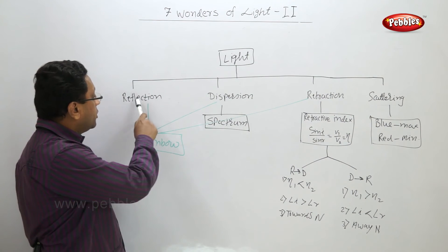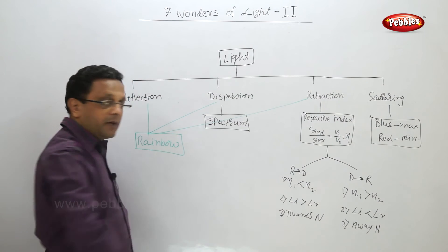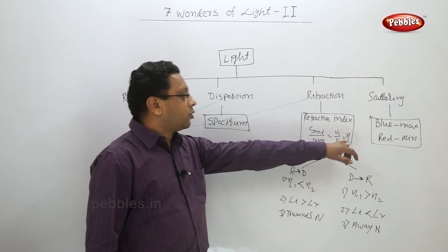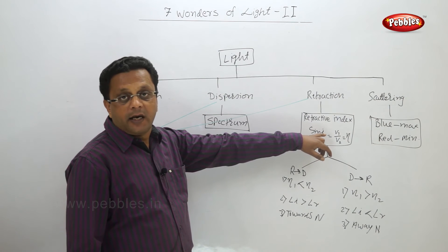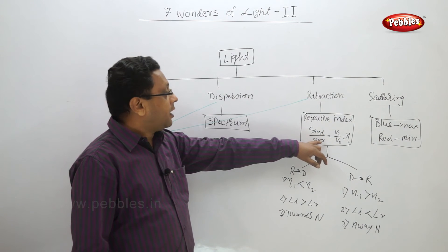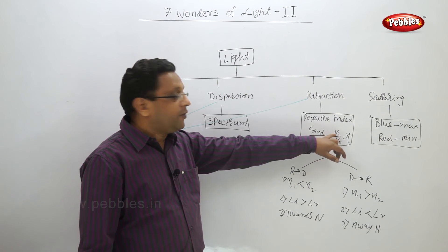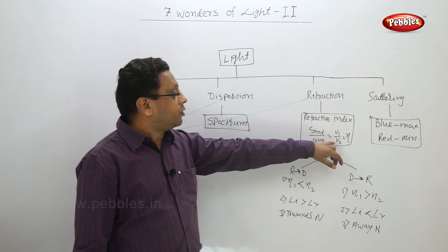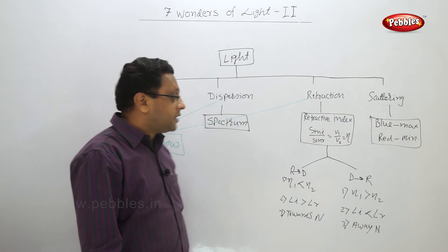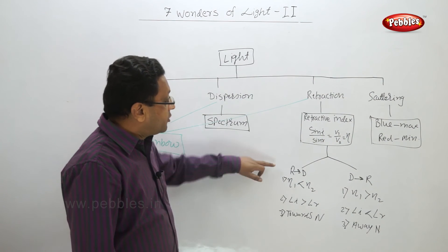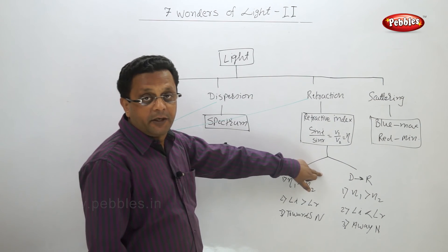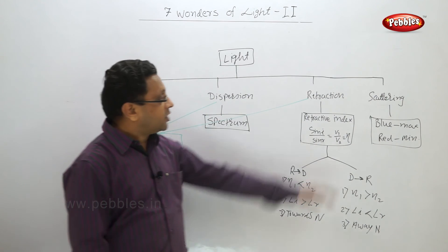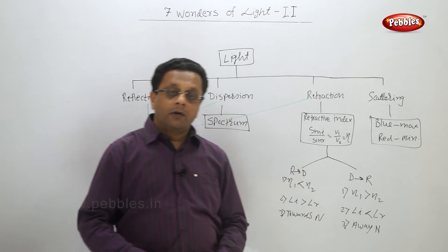We see rainbow - reflection, dispersion, refraction combined. In refraction we have refractive index which is called as n, sin i upon sin r. i is the incident angle, r is the refractive angle. v1 is the velocity of light in first medium and v2 is the velocity of light in second medium. Then when it travels from rare medium to denser medium, what happens? From denser medium to rare medium, what happens? Then what is scattering of light?